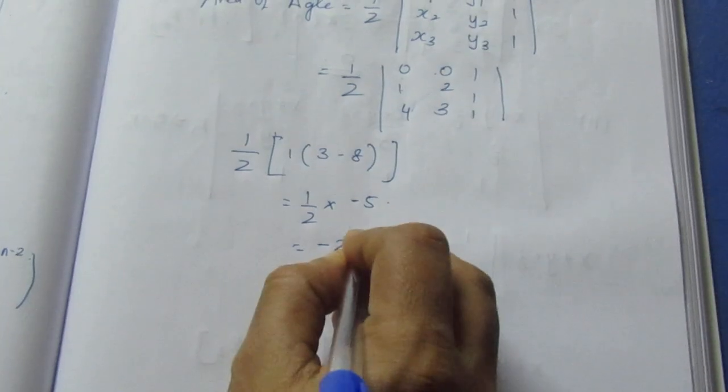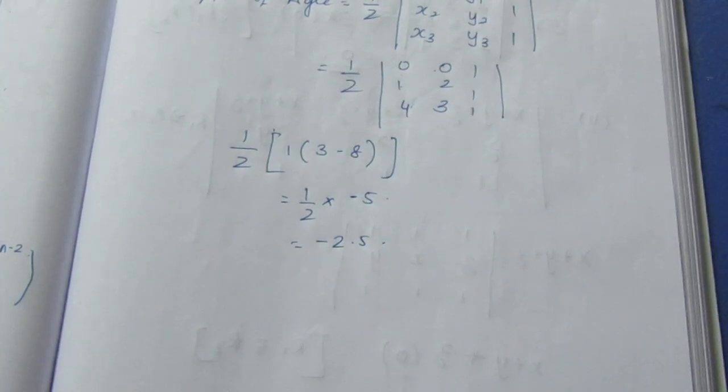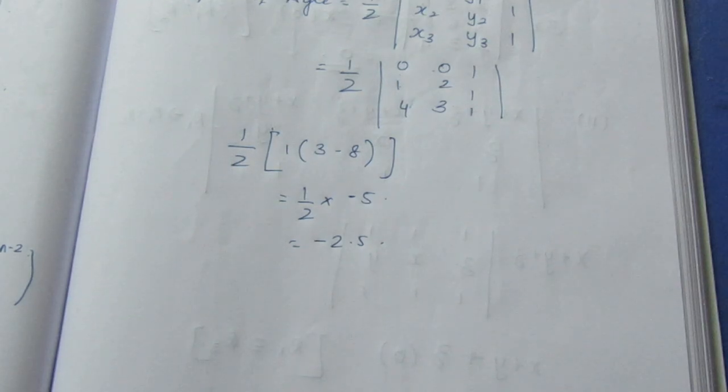Half into minus 5, which is equal to minus 2.5. But this is the area of a triangle. If you look at this formula, negative and positive answer is positive.